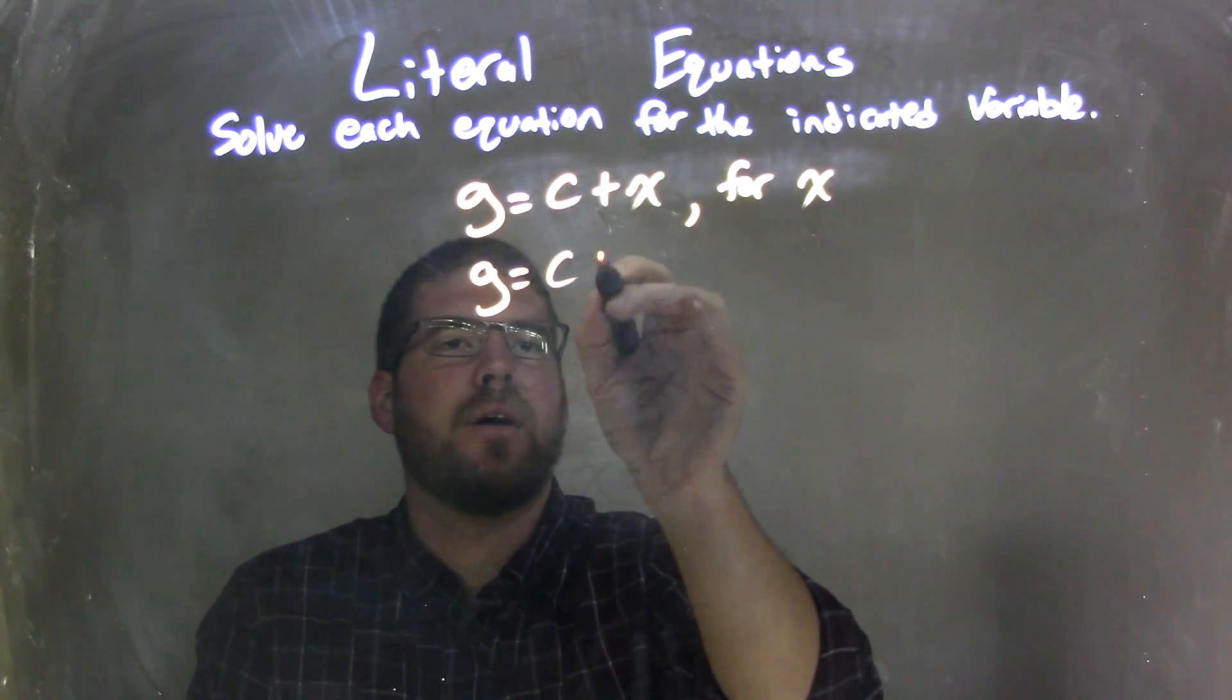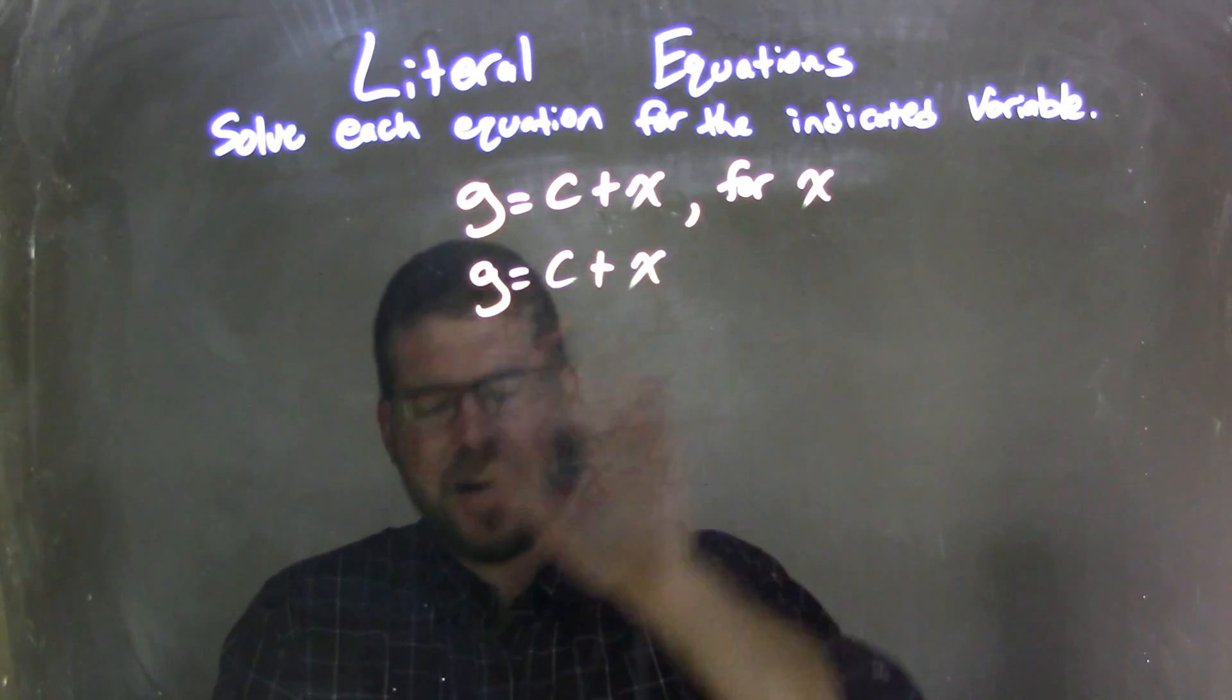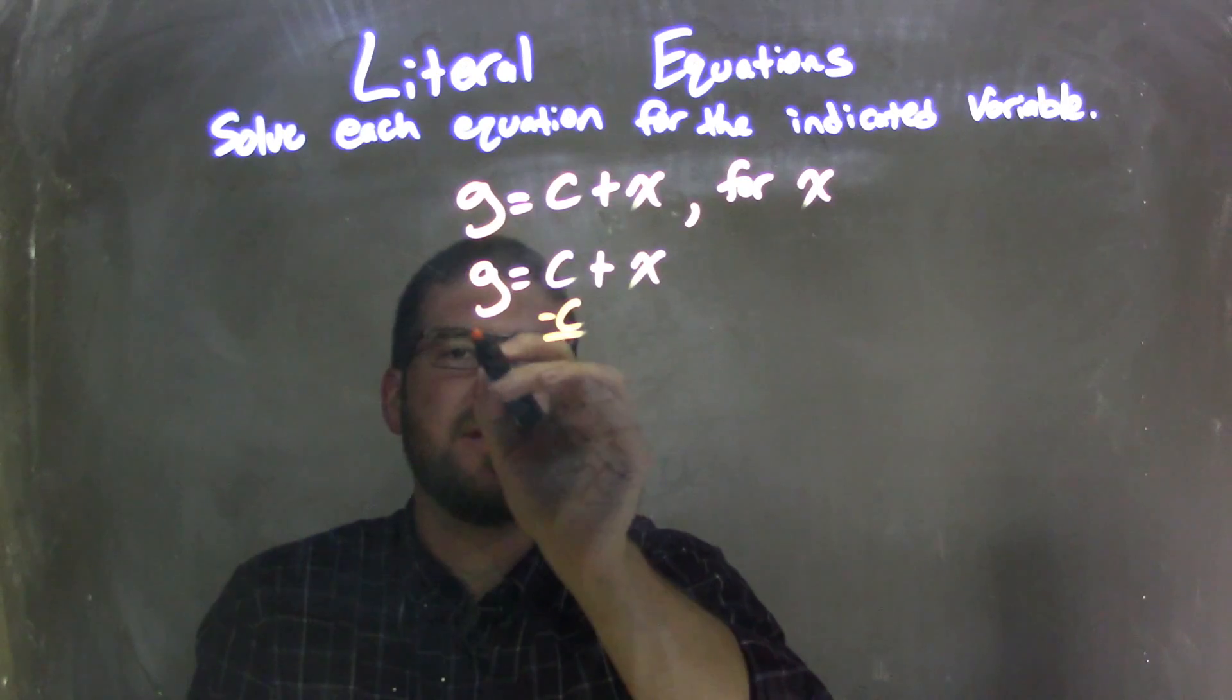I'm going to rewrite my equation so that's nice and separate here from the problem. Now I have a positive c there. I need to bring that over to the left, and to do that, I'm going to subtract c from both sides.